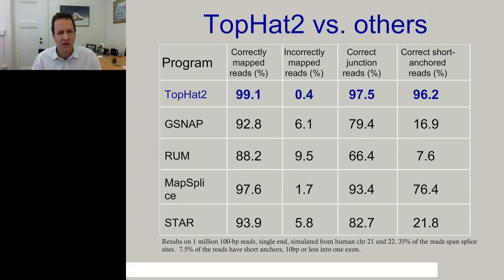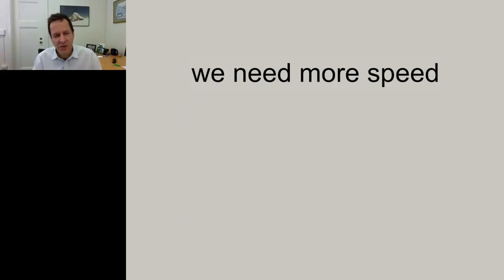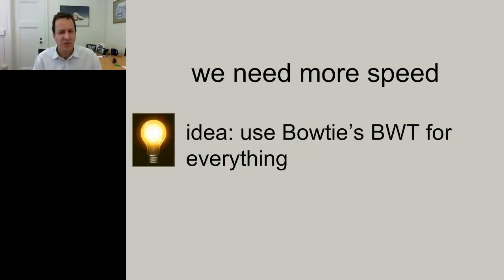Those improvements made TopHat even better than TopHat 1, but we wanted it to be faster. Because datasets have been growing and TopHat 2 was doing additional work, it was slowing down. The key insight from Daehwan Kim was: we already use Bowtie for the first step because it's so fast—why not try to use the Burrows-Wheeler Transform data structure and algorithms for everything, or as much as possible?